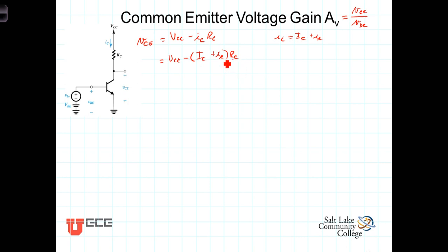Now if we distribute the R sub C times the I sub C, we get then VCC minus R sub C, I sub C. Those are both DC component values minus R sub C times I sub C or I sub little c times R sub C. Now this of course is just capital V, capital C, E, the DC component at the collector minus VCE, the small signal component of the collector-to-emitter voltage.